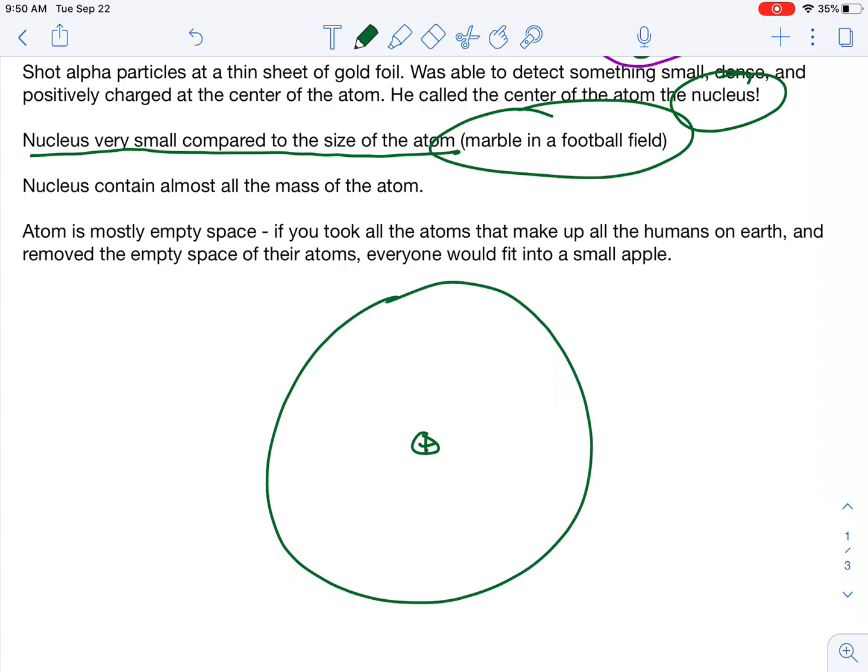He said the nucleus is very small compared to the size of the atom. What I want you to think about is a marble in a football field. So even bigger than that, really. It's more like a marble at the 50-yard line of Gillette Stadium. And Gillette Stadium would be the whole atom, and that tiny little center of the atom is the marble. So there's a lot of empty space of the atom.